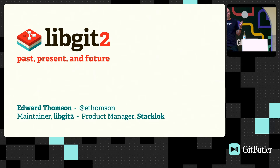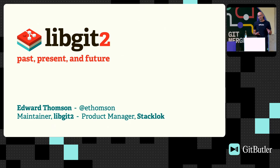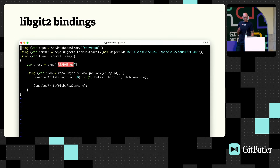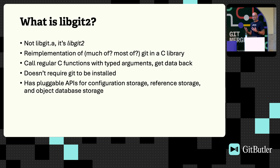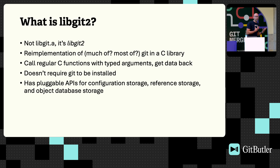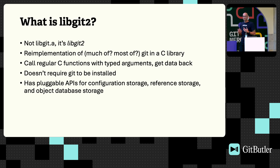I'm here to talk about libgit2. What is libgit2? It's a reimplementation of some or much or maybe even most of git in a C library, so that you can call regular C functions with typed arguments and get data back. You don't have to figure out how to format arguments to git, how to invoke that process and then parse its output. I don't really like screen scraping things. Maybe you don't either — if so, maybe libgit2 is for you.